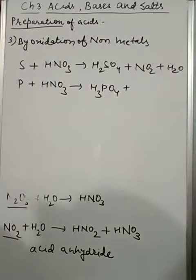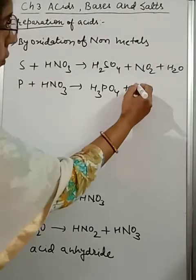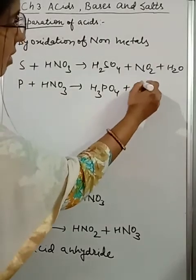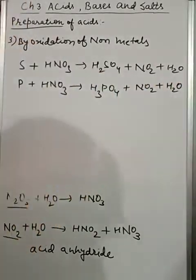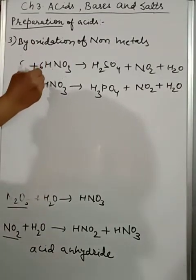Here we will get phosphoric acid H3PO4, and after this you have to balance it. So here you will get NO2 plus H2O, and balancing part you take care of. These two are going to give you the concerned acids: sulfuric and phosphoric acid.